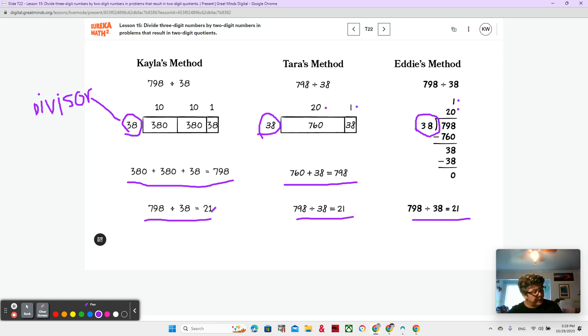So Kayla and Tara have different area models and different partial products, but they have the same quotient. So how is that possible? What's going on there? Look at what they're doing. Here's their quotients. They're on top, as well as the quotients. All the quotients are on top, so that's another thing that's the same. 10 and 10 and 1, 20 and 1, 20 and 1. So they're using different partial quotients here because Kayla started with 10 times 38 is 380, and Tara went straight to 20 times 38 is 760. It might be a little easier to think about the 10s because we know that 10 times 38 is 380. You wouldn't have to do some multiplication on the side.